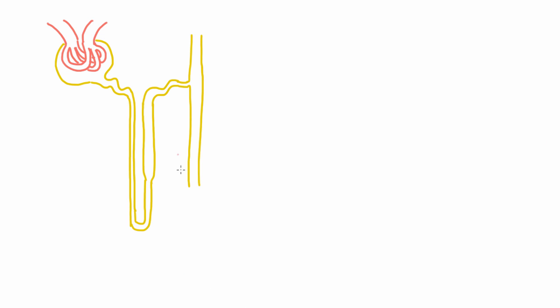Now we've talked about how this loop of Henle helps us get a really high concentration down here. And to remind you, here is the medulla — the medullary interstitium. Let's draw our bigger picture of a kidney again to visualize where that is.